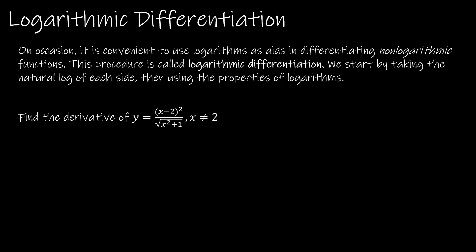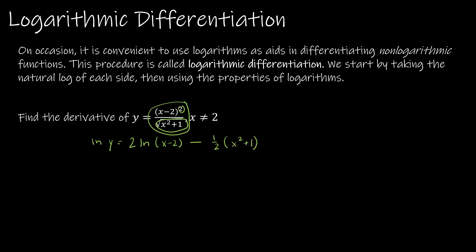When we use logarithmic differentiation, we start by taking the natural log of each side: ln(y) equals the natural log of all of this. Instead of writing that step out explicitly, I'll go ahead and write it expanded. The numerator has an exponent of 2, so I write 2 times ln(x minus 2). Since we're dividing, I use subtraction, and the denominator is to the one-half power, so I move that out front: one-half times the natural log of x squared plus 1. That's how I rewrite it using natural log properties.